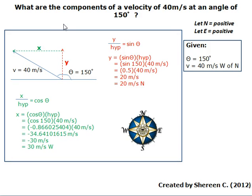What are the components of a velocity of 40 meters per second at an angle of 150 degrees? To find the components, use sine and cosine.